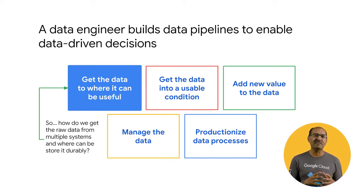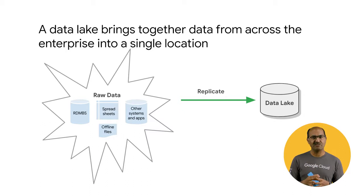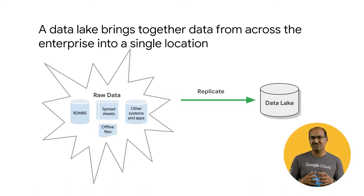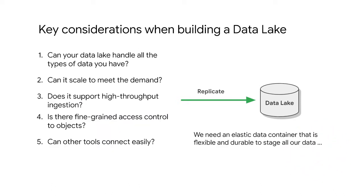Many times, the raw data is by itself not very useful. One term you will hear a lot when you do data engineering is the concept of a data lake. A data lake brings together data from across the enterprise into a single location. So you might get the data from a relational database or from a spreadsheet and store the raw data in a data lake. One option for this single location to store the raw data is to store it in a cloud storage bucket. So what are some of the key considerations when deciding between different data lake options?